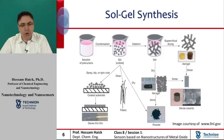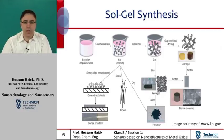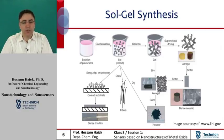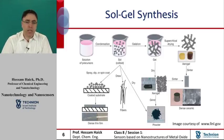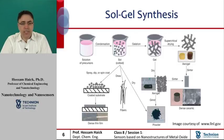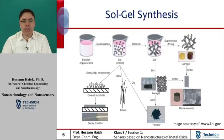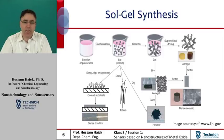First, sol stands for a stable suspension of colloidal solid particles or polymers in a liquid. Second, gel stands for a porous three-dimensional continuous solid network surrounding a continuous liquid phase. Third, colloidal gels stand for agglomeration of dense colloidal particles. Fourth, polymeric gels stand for agglomeration of polymeric particles made from sub-colloidal units. And fifth, agglomeration stands for covalent bonds, van der Waals forces, hydrogen bonds, polymeric chain interactions, and more.